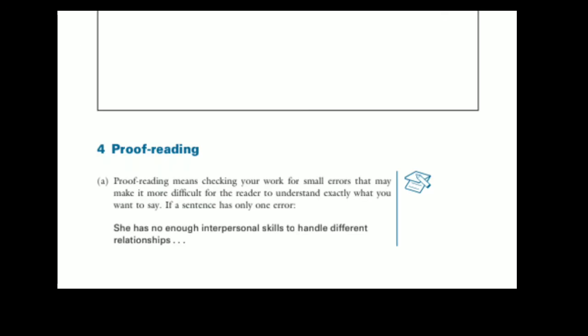Proof-reading means checking your work for small errors that may make it more difficult for the reader to understand exactly what you want to say. If a sentence has only one error, she has no enough interpersonal skill to handle different relationships.